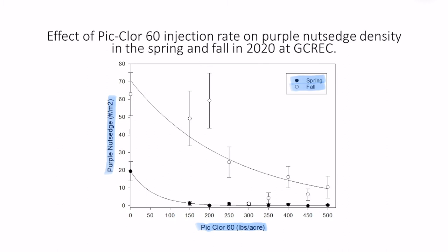We did have a higher nutsedge density in the fall than in the spring, and control rates achieved in the spring were greater than those achieved in the fall. For example, in the spring at about 150 pounds per acre, you have almost 100% control of purple nutsedge, whereas in the fall at 500 pounds per acre, you significantly reduced the nutsedge population, but it's still not completely controlled.